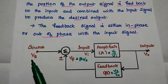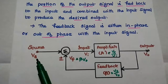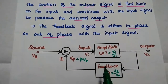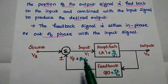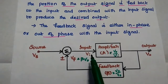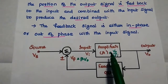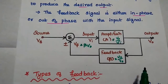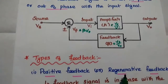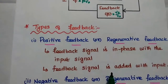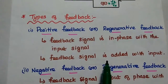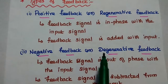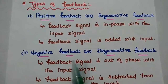Here, Vs represents the source input signal. Vf represents the feedback signal from the feedback network. Vi is the actual input given to the amplifier. V0 is the output signal. The types of feedback are: positive feedback, also called regenerative feedback, and negative feedback, also called degenerative feedback.